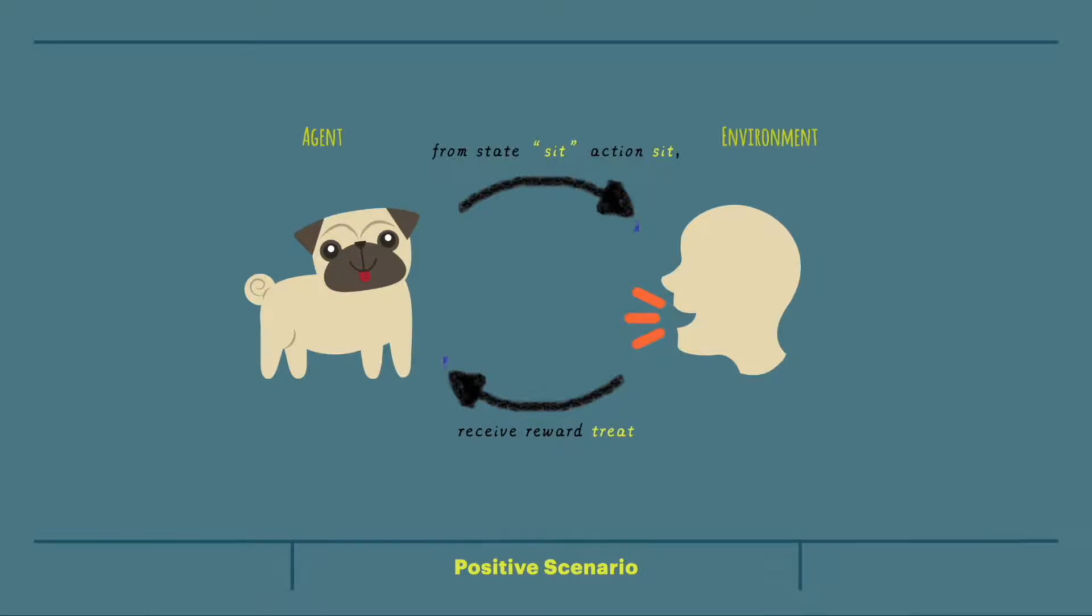The last component for learning is reward. When we say sit, if we want our dog to learn, we give it a treat whenever it sits. If the dog rolls over instead, we don't reward it. We punish it so that it learns how to act optimally moving forward.